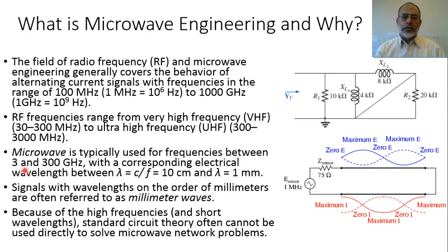For a frequency of 3 GHz, the wavelength would be 3 times 10 to the power 8 over 3 times 10 to the power 9, giving a result of 0.1 meter, which corresponds to 10 cm. On the other hand, for 300 GHz, the wavelength would be 1 mm. So from the wavelength range of 10 cm to 1 mm, we call these signals microwaves.